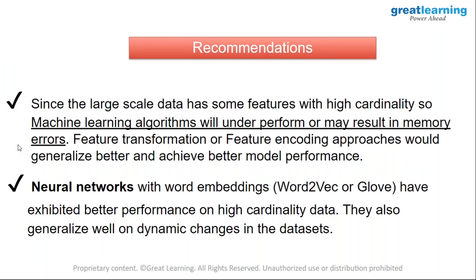We can still do better using neural networks. Neural networks have a concept similar to encoding called embeddings. Pre-trained embeddings for textual and structured data are readily available and can improve model performance. Neural networks also help generalize — even if a new description doesn't match the existing dataset, the embeddings can still help categorize it. However, since neural networks and deep learning are advanced topics not covered here, this is where the presentation concludes.